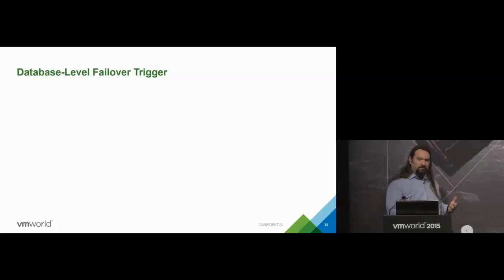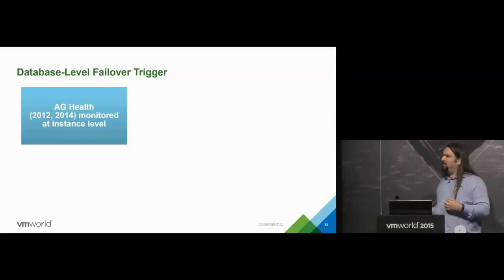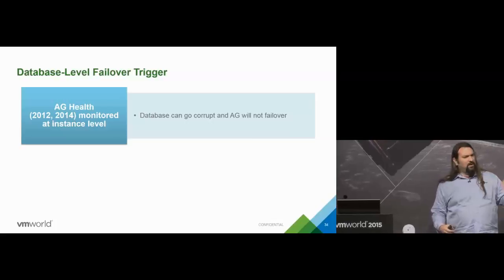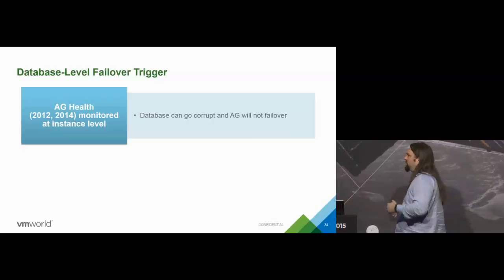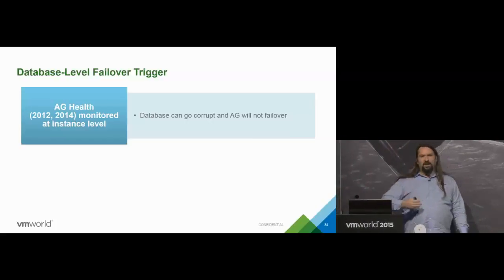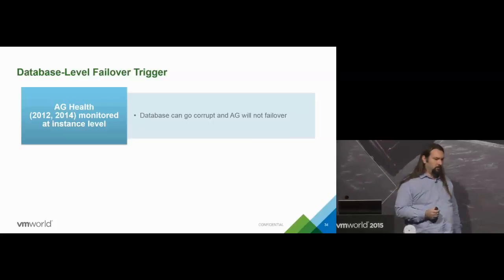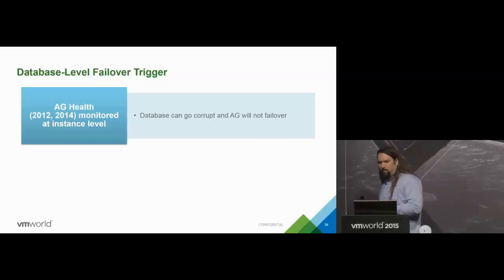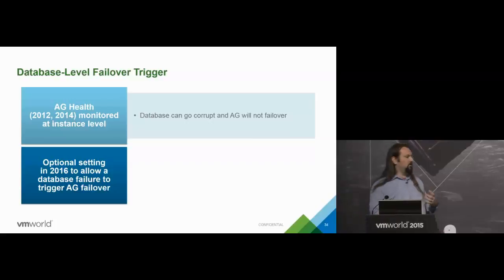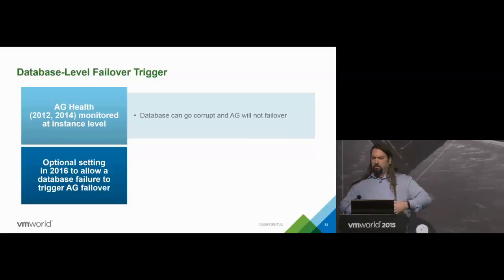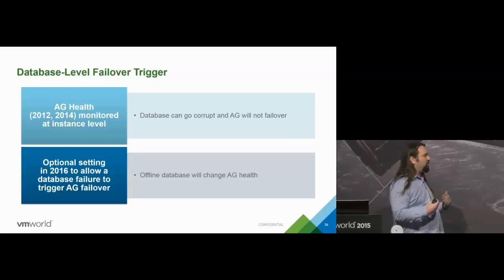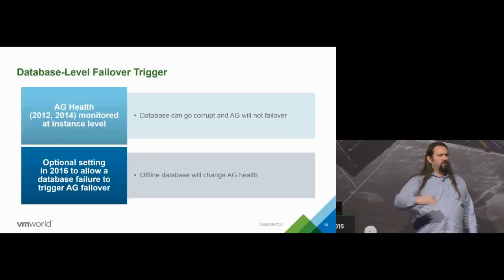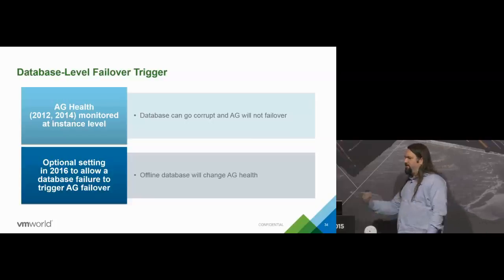Database-level failover support is the ability for a database to go offline and trigger a failover. Today in SQL Server 2014 and below, if there's an issue at the instance level and SQL Server crashes, failover happens. In SQL Server 2016, we'll monitor at the database level — if a database becomes corrupt, it'll failover automatically. It's an optional setting so DBAs won't be alarmed by databases failing over by themselves. Instead of waiting for a phone call saying 'the database is offline,' it would simply failover, bring itself back online, and start pushing data back to the other server.